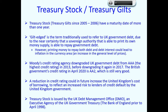Following the redefinition of treasury stock to treasury gilts in 2005-06, Moody's credit rating agency downgraded UK government debt from AAA — the highest possible credit rating — downgrading it in 2013 and again in 2017. Currently, as of April 2020, the British government's credit rating is AA2, which is still very good but below the AAA rating held up to 2013. In the future, a reduction in the UK government's credit rating could increase the government's cost of borrowing to reflect increased credit default risk.